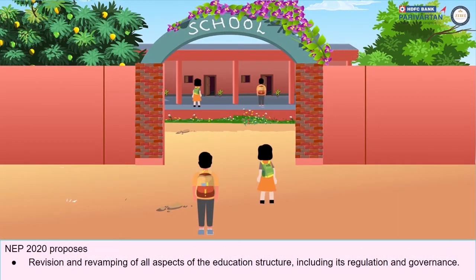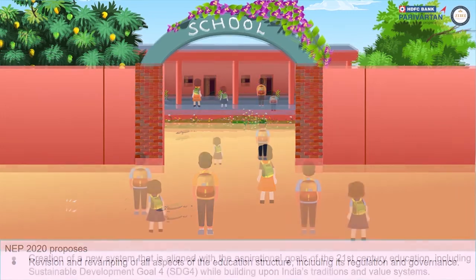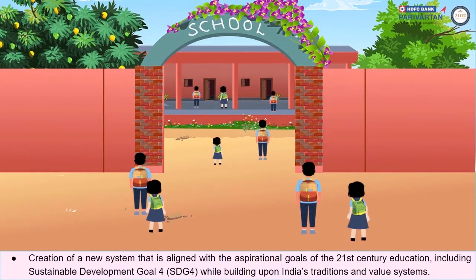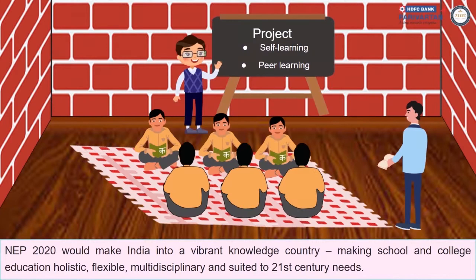NEP 2020 proposes revision and revamping of all aspects of the education structure including its regulation and governance. It also proposes creation of a new system aligned with the aspirational goals of 21st century education, including Sustainable Development Goal 4, while building upon India's traditions and value systems. NEP 2020 would make India a vibrant knowledge country, making school and college education holistic, flexible, multi-disciplinary, and suited to 21st century needs.